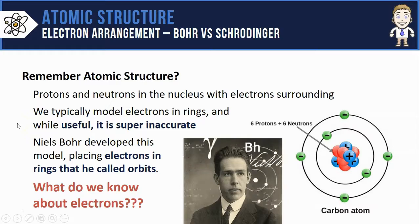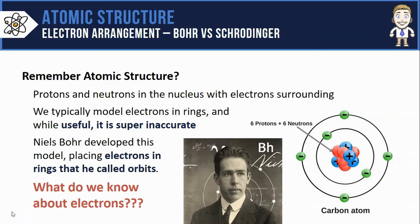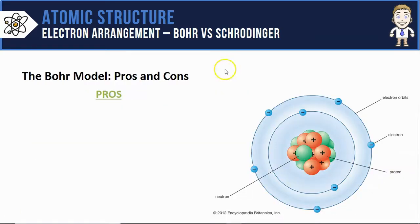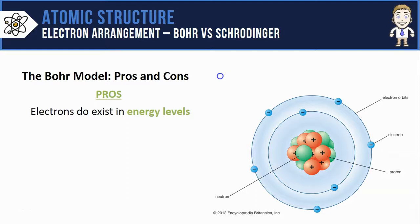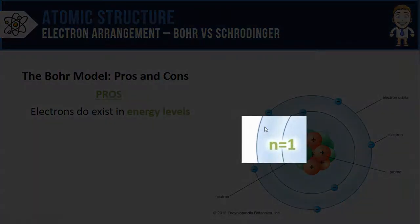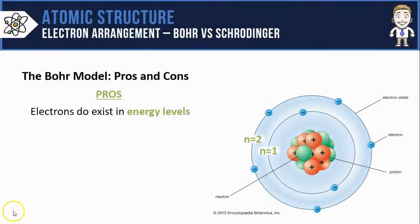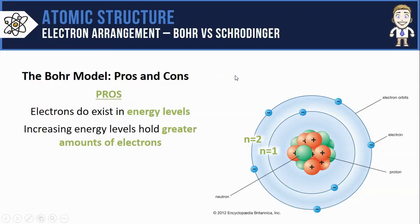In this video we're going to focus on what we actually know about electron arrangement today. While the Bohr model wasn't totally correct, there were some good things about it — electrons do in fact exist in energy levels, like energy level 1 and energy level 2 we can see in this Bohr model. Bohr also said that increasing energy levels can hold greater amounts of electrons. That turns out to be true: the first energy level can hold 2 electrons at most, whereas the second can hold 8.